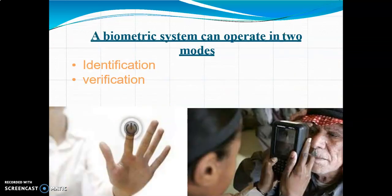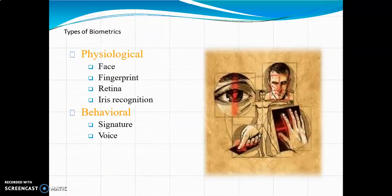A biometric system can operate in two modes: identification and verification. There are two types of biometrics — physiological and behavioral. Under physiological we have face, fingerprint, retina, and iris recognition. Under behavioral we have signature and voice.